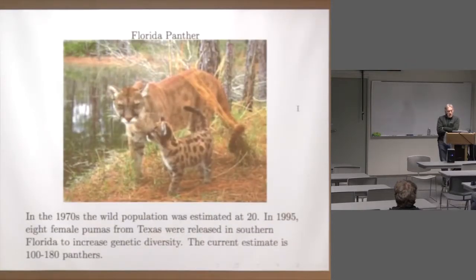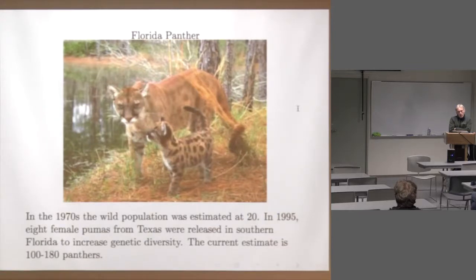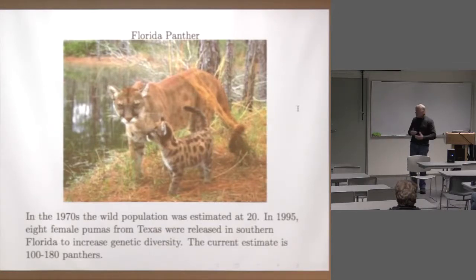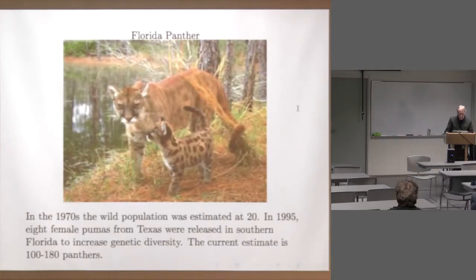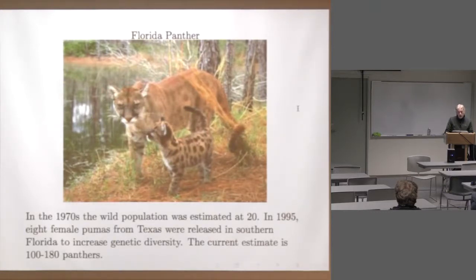The Florida panther population was probably down to about 20 individuals before 1995. The animals are now found mainly toward the Florida Everglades, and the main source of mortality is highway fatality on the Tamiami Highway. They were also showing signs of inbreeding, so in 1995 eight female pumas genetically close to the panther were released into southern Florida to increase genetic diversity. The estimate is now 100 to 180 panthers.